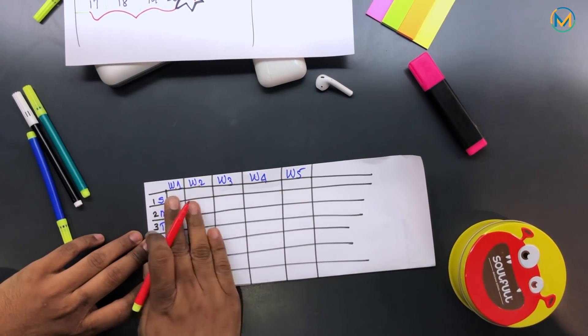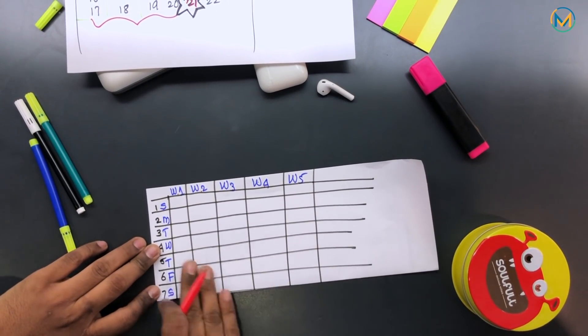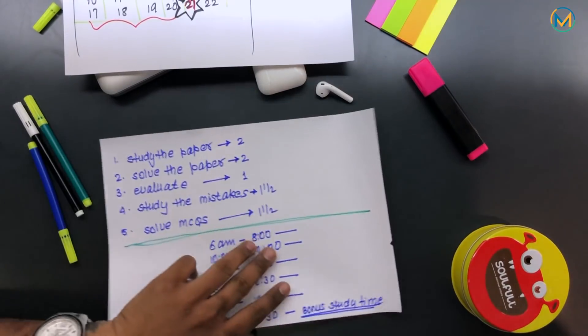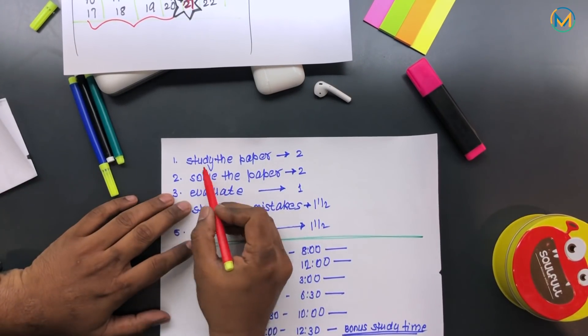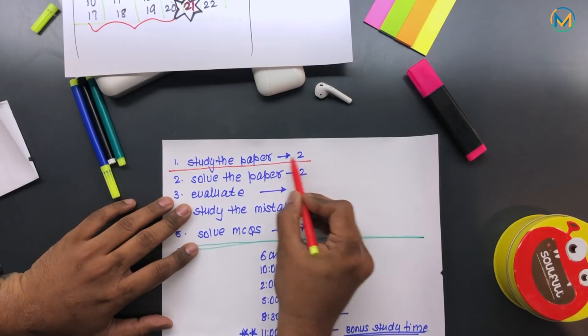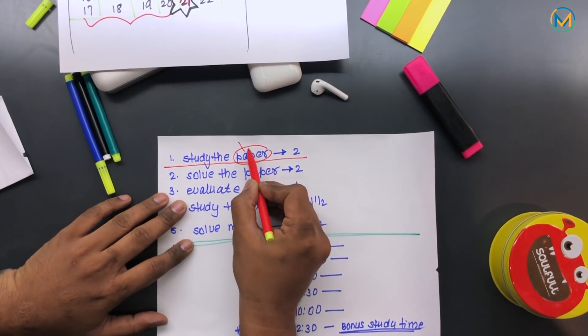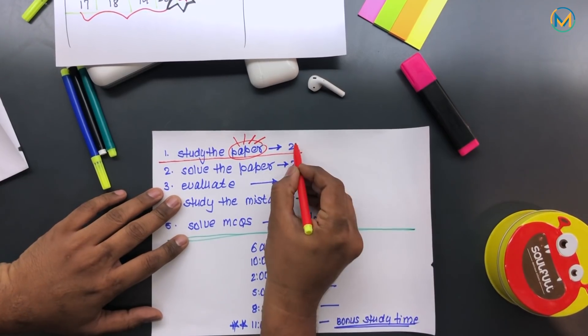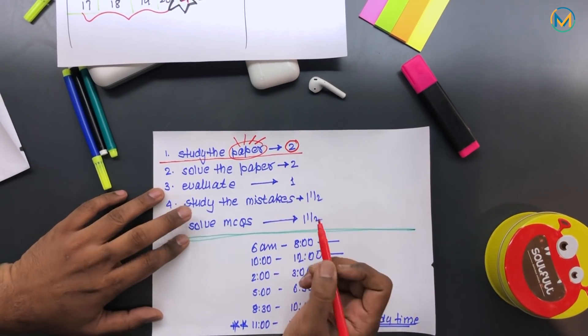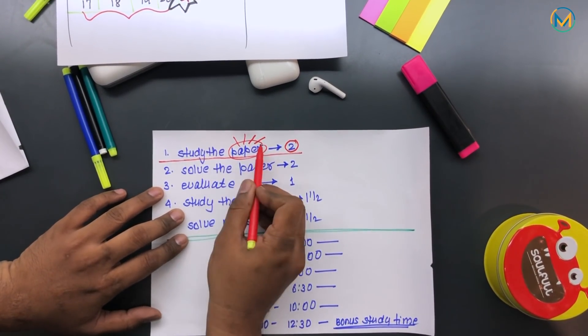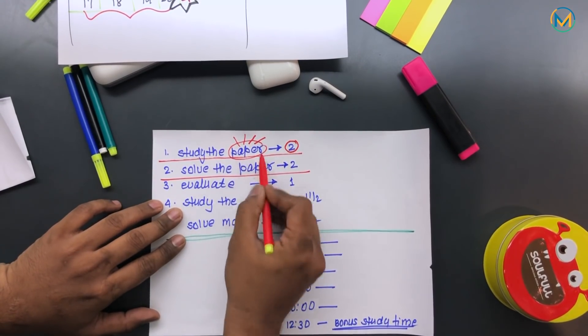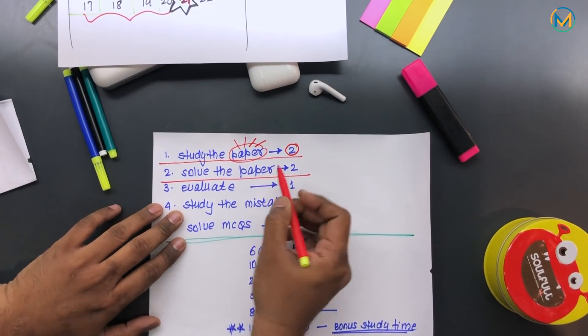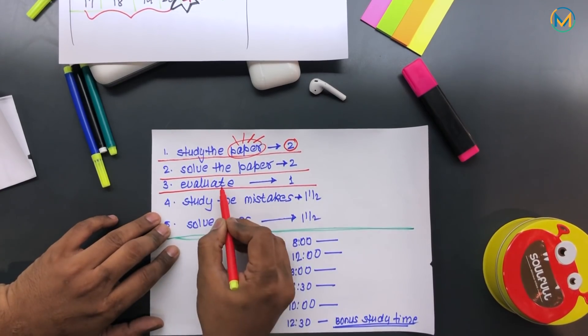This is week one, week two, week three, week four, week five, and these are the seven days of each week. I'm going to tell you what to do on each of the days. Every day when you begin, I want you to start studying a paper. This can be a sample paper, a mock paper, a college paper, or the past paper, and I want you to invest two hours on it. After you study that paper, you solve the same paper which you studied, and after that you evaluate it.